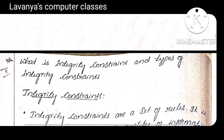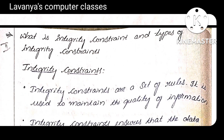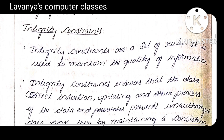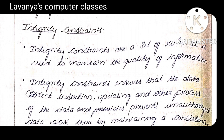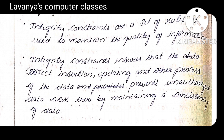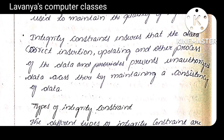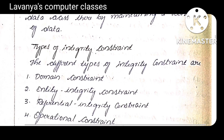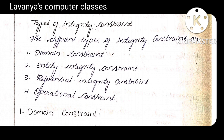Next — very important — what are the integrity constraints? Integrity constraints are a set of rules used to maintain the quality of information. If you want to maintain the quality of information, we use integrity constraints. The types of integrity constraints are: domain constraint, entity integrity constraint, referential integrity constraint, and operational constraint.